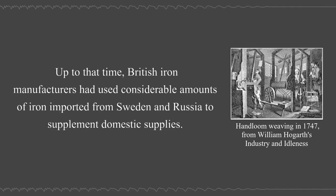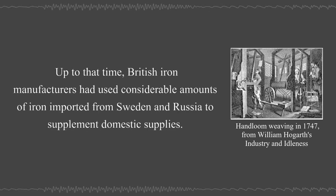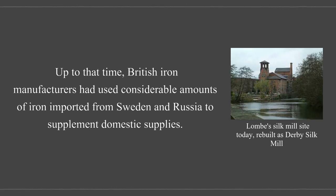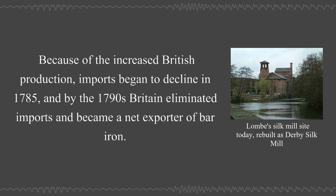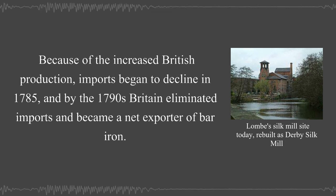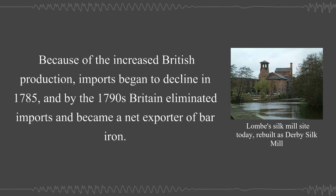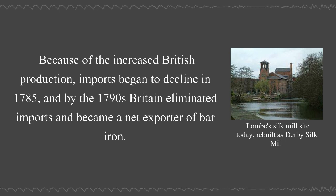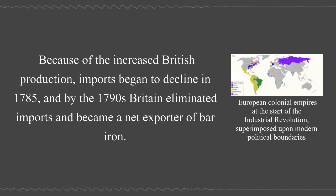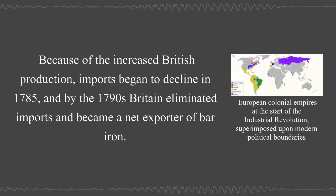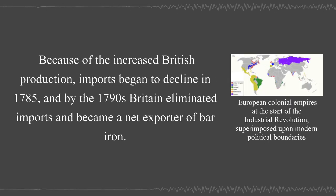Up to that time, British iron manufacturers had used considerable amounts of iron imported from Sweden and Russia to supplement domestic supplies. Because of the increased British production, imports began to decline in 1785, and by the 1790s, Britain eliminated imports and became a net exporter of bar iron.